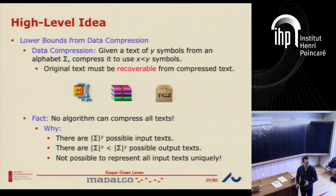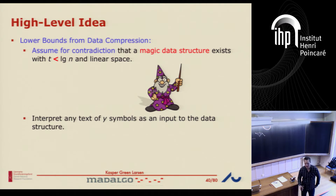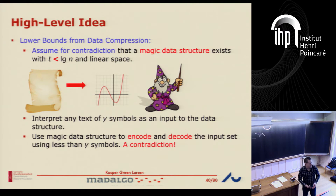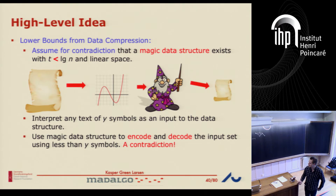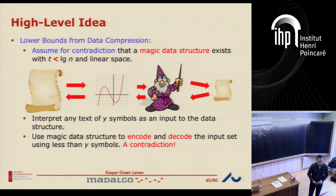The idea when using this incompressibility argument for data structure lower bounds is: assume I have a magic data structure that's really fast — faster than the lower bound I'm aiming to prove. I want to interpret any text of, say, y symbols as an input to this data structure problem. A text becomes a polynomial — we can interpret every text as a polynomial. I want to use this magic data structure as a black box to compress this input text into something smaller than the number of texts. I must be able to recover the original text from this compressed representation. If I can compress every single text of length y into something shorter, I get a contradiction — there's just not enough unique smaller text to achieve this. So the assumption about the magic data structure existing had to be false.